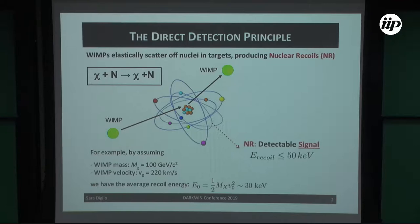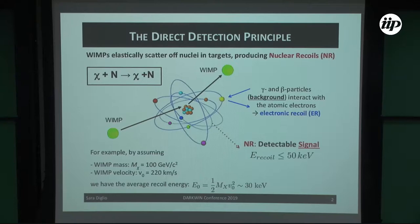Once a WIMP interacts with the target, this gives rise to an electronic recoil. The energy region we are interested in is electronic recoils of the order of or below 50 keV. This can be inferred with some simple assumptions — for example, for a WIMP mass of 100 GeV and the WIMP velocity, using simple kinematics you end up with a recoil energy of the order of 30 keV.